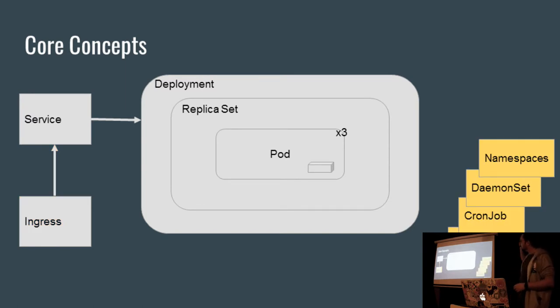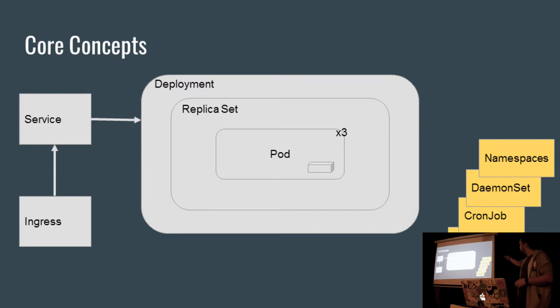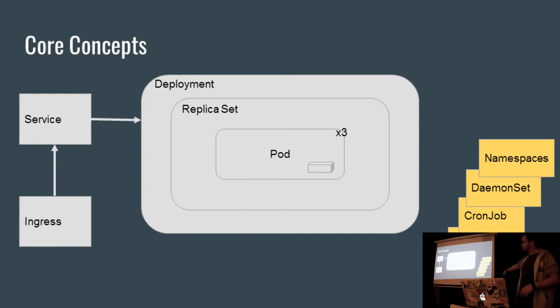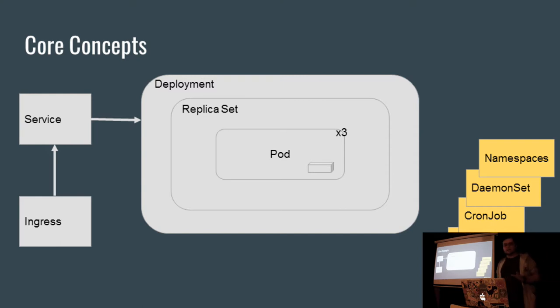There's also a bunch of other stuff that I'm not really going to cover. You've got namespaces, which I like to think of as ring-fencing things, daemon sets, cron jobs, configs, stuff like that. I'm not going to cover it because there's not really time.